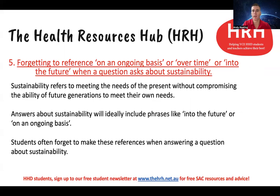Number five is forgetting to reference 'an ongoing basis,' 'over time,' or 'into the future' when a question asks about sustainability. You've probably looked at sustainability and the three different dimensions, and know that it generally refers to meeting the needs of the present without compromising the ability of future generations to meet their own needs. Sustainability is talking about now and into the future. When answering questions related to sustainability, you need to include phrases like 'into the future' or 'on an ongoing basis' — for example, if referring to access to education, you'd talk about people having access to education now but also into the future or on an ongoing basis. Don't forget to include those phrases in your answers to questions about sustainability.